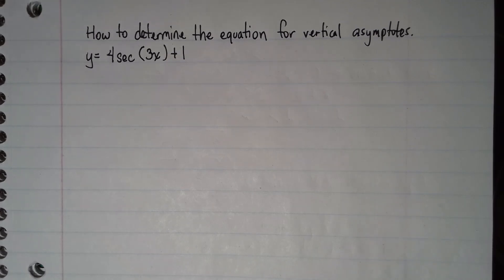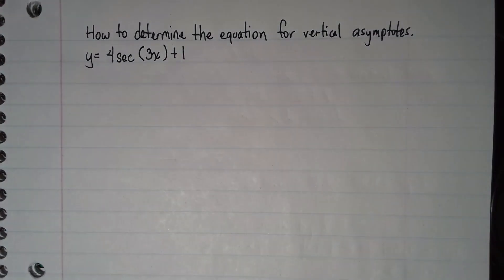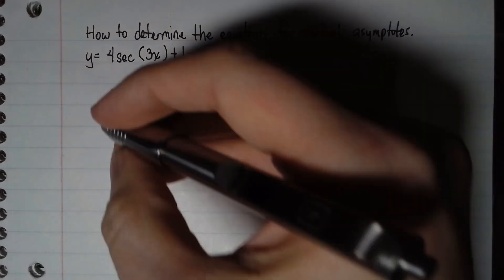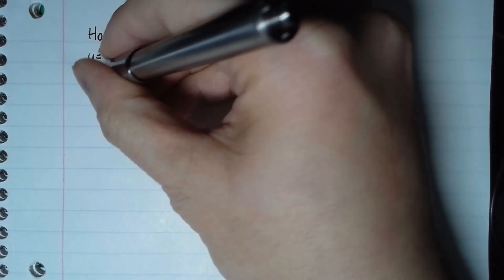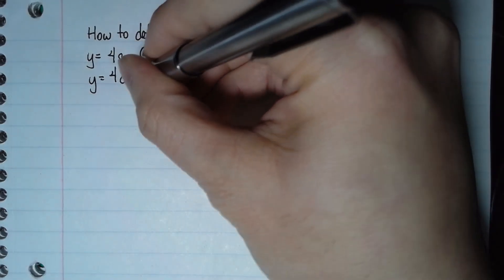We are going to talk about how to determine the equation for vertical asymptotes, and we are going to use this equation for secant as an example. Even though we see secant, the first thing I'm going to do is change it and treat it like cosine, the reciprocal of secant.